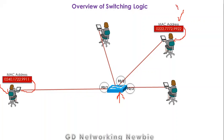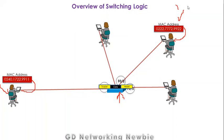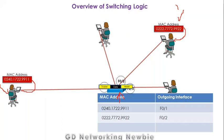For illustration, we have four users or nodes connected with this switch, forming a local area network. This is the source node and this is the destination node, each with their respective MAC addresses. When this user wants to send data to the destination, a frame is generated and sent to the switch. The switch receives the frame, looks into the header part, and reads the destination MAC address.